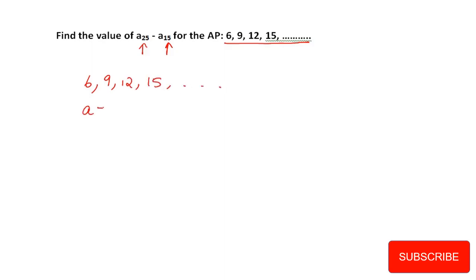You will get the a value which is 6, and the d value which is 3. Because a is our first term, so this is 6, and d is the first two difference or any consecutive number difference.